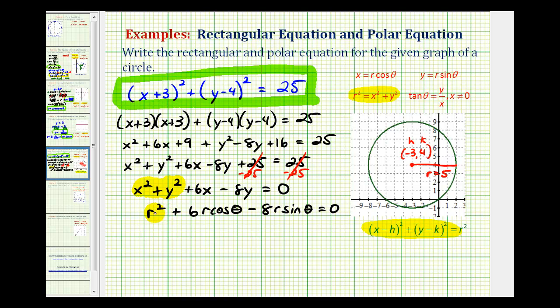And now to solve this equation, notice how there's a common factor of r. So we can factor out an r that will leave us with r plus six cosine theta minus eight sine theta equals zero.